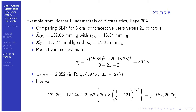Another thing to keep track of is what order you've subtracted things in. In this case we did contraceptive users minus controls. Pick a rule and stick with it — I always use treated minus control. You get the negative of the interval if you do it the other direction. If the interval were entirely above zero, you'd say oral contraceptive users had a higher systolic blood pressure; if you forgot the order, you'd get the exact opposite interpretation. So remember what order you subtract things in.